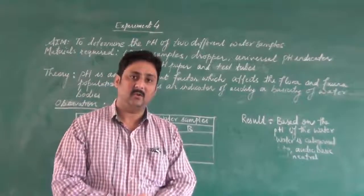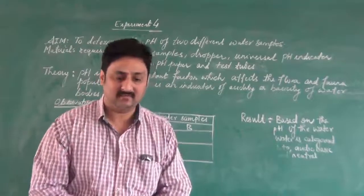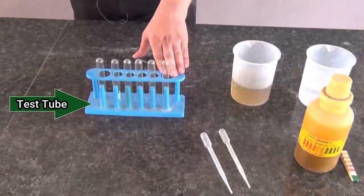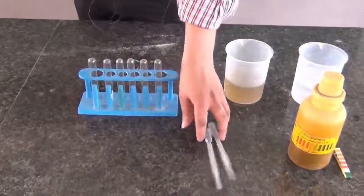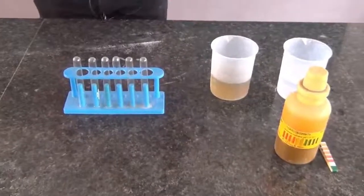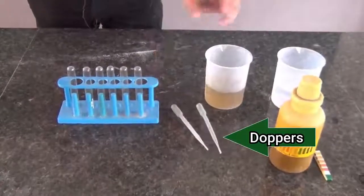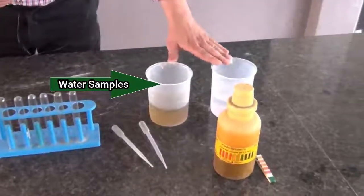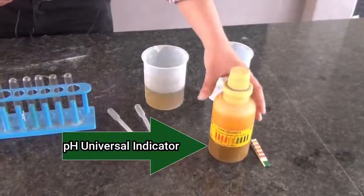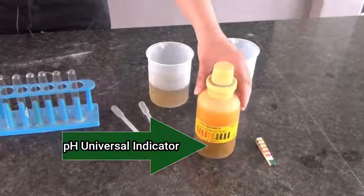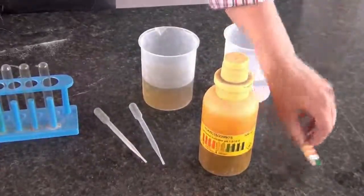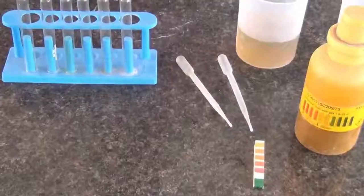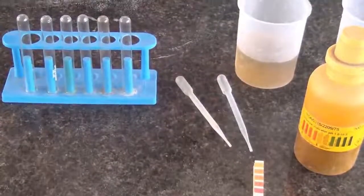Let us now talk about the apparatus here. You can see the test tubes which are being kept here. These are the droppers, two water samples one and two, this is a pH universal indicator solution, and we have the pH paper also. Now let us start with the experiment.